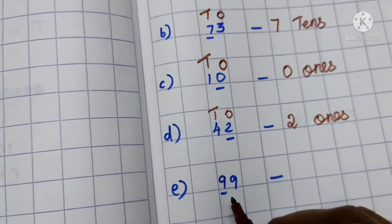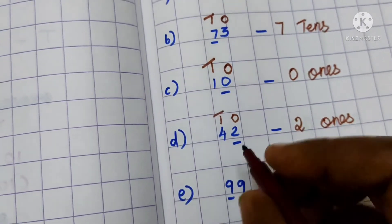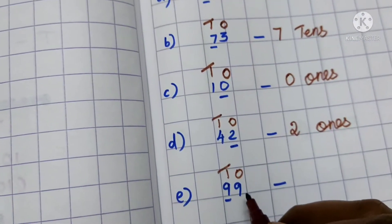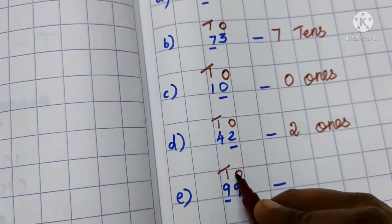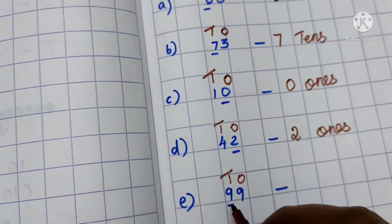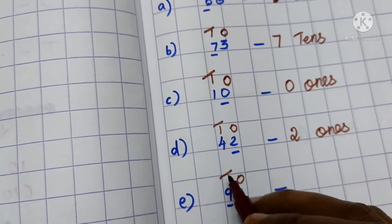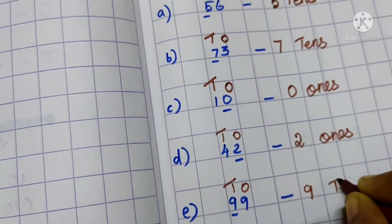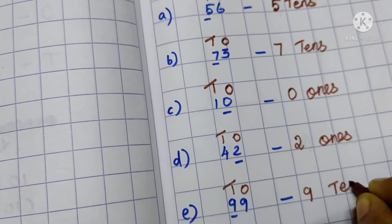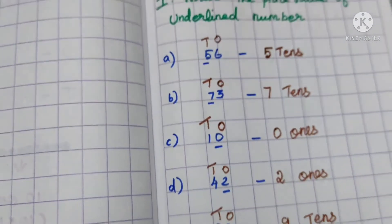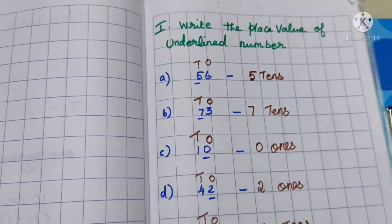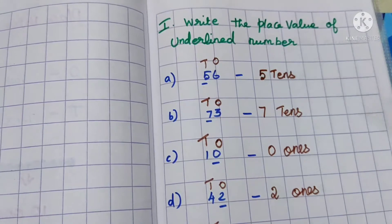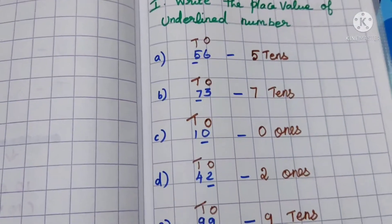And then the last one — here also put the place value. We write the answer: 9 ones and 9 tens. The underlined number is 9 tens. Write it here: 9 tens. This is where we find the place value of the underlined number. We only take and write the underlined number's place value. Right, children?